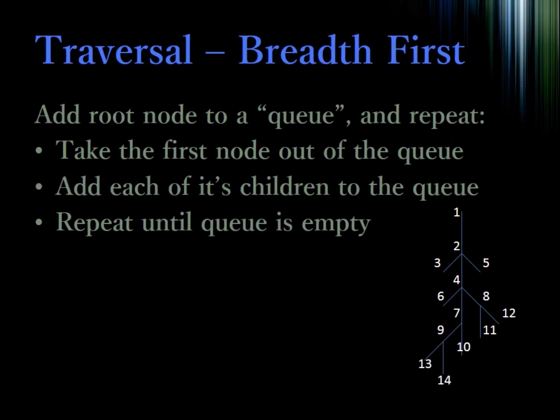The breadth first search takes the opposite approach. For each node, we want to add that node to a queue. You can think of a queue just like you would in real life when you go to an amusement park and you're waiting in line to get on a ride. So we take the root node, we put it into the queue, and then we take the first node out of the queue and check each of its children into the back of the queue. We then repeat this process until there are no nodes left in the queue. So here again, we will go 1, 2, 3, 4 — however, instead of proceeding down the tree, we add 5 onto the back of the queue.